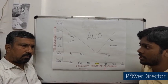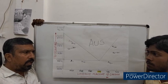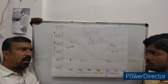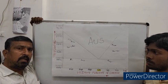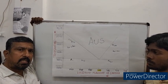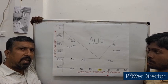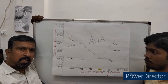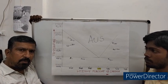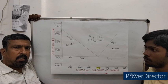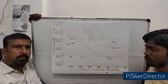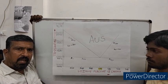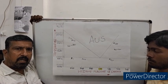Does it happen at a single temperature? For eutectoid steel, that happens at a single temperature. For hypo-eutectoid steels and hyper-eutectoid steels, it takes place over a range of temperatures. The lower temperature, where the transformation starts, is the lower critical temperature. And the higher temperature, where the transformation completes, is the upper critical temperature.